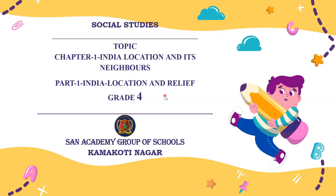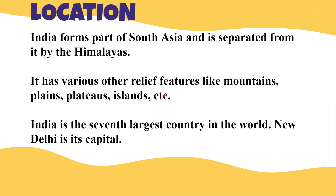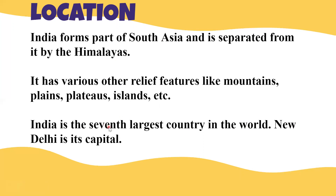Our country is located in one part of South Asia and it is separated from the rest of Asia by the Himalayas — a huge range of mountains on the north of our country. The Himalayas separate us from the rest of Asia. Not only the Himalayas, we also have other relief features: plains, plateaus, islands, and so on. India is the seventh largest country in the world.